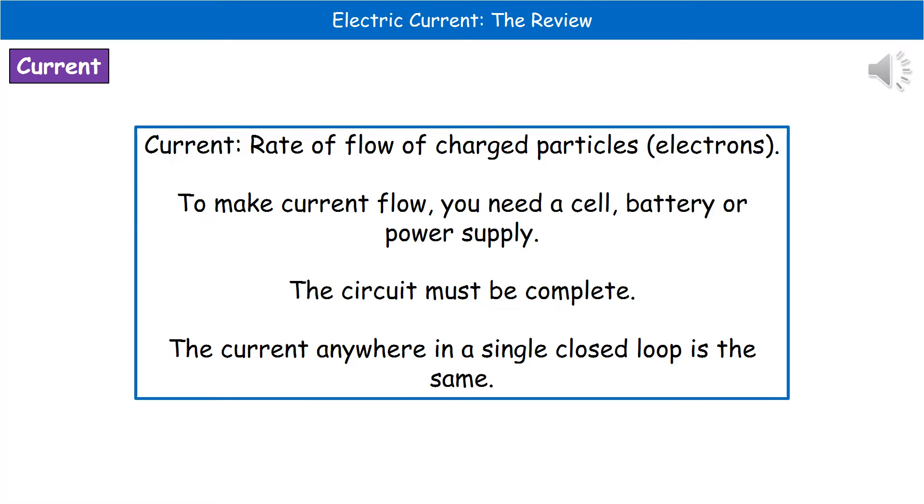In order to actually make that current flow, we need two important things. First of all, we need something like a cell, battery, or power supply. And the second thing is that we need the circuit to be complete. So if there's any gaps in the circuit, then current won't flow.